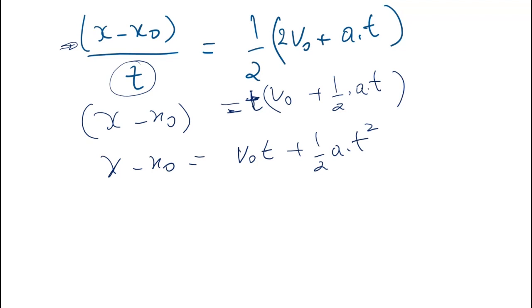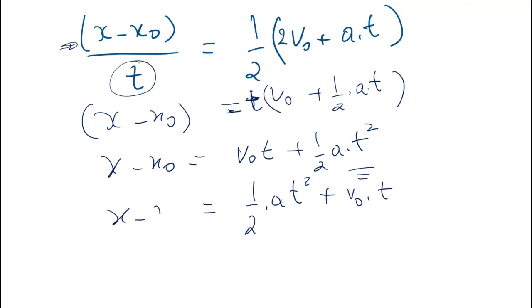Writing the higher power term first: x minus x₀ equals one-half times a times t² plus v₀ times t. This is our displacement equation.